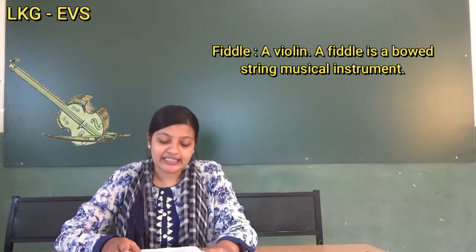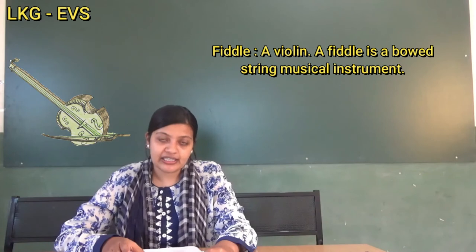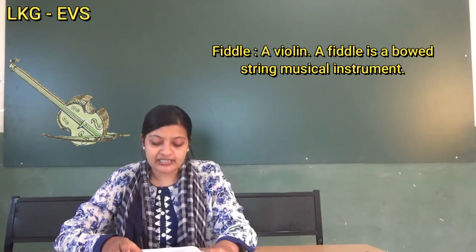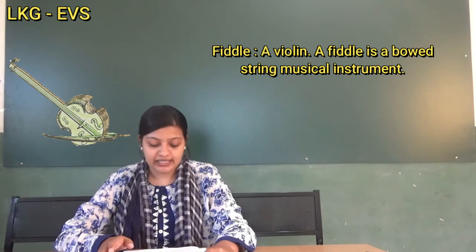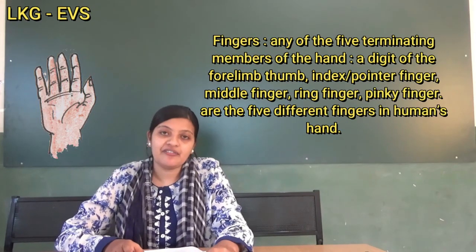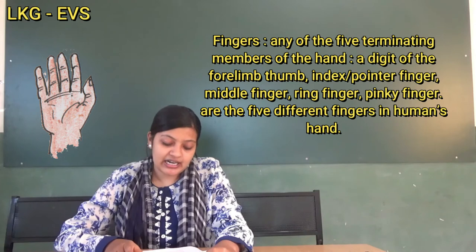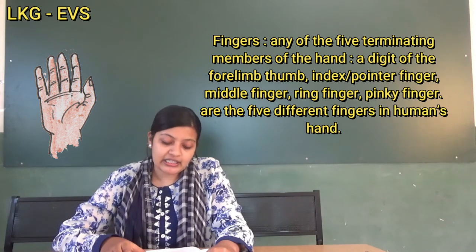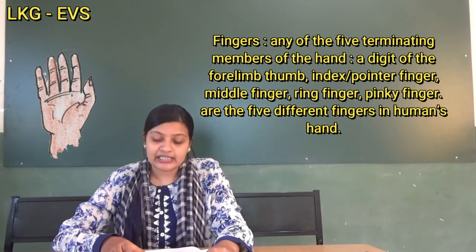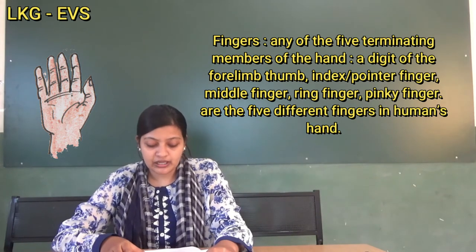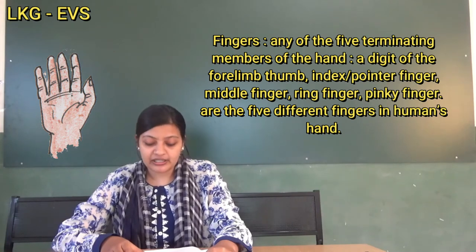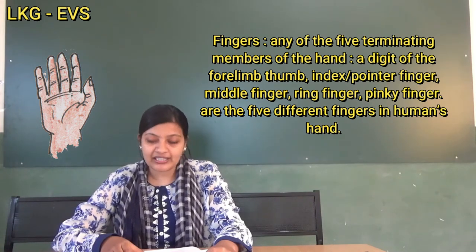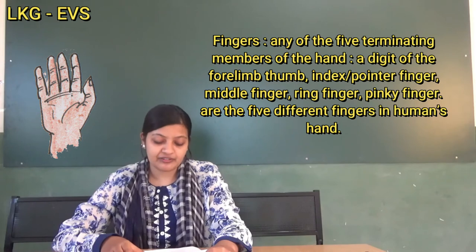Next, F-I-D-D-L-E. Fiddle: a violin. A fiddle is a bowed string musical instrument. Next, fingers. F-I-N-G-E-R-S. Fingers: any of the five terminating members of the hand. A digit — the thumb, index or pointer finger, middle finger, ring finger, and pinky finger are the five different fingers.